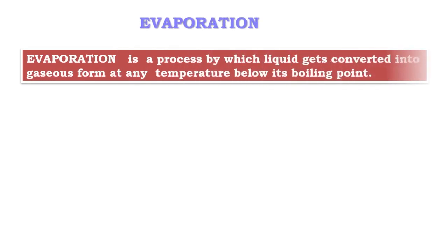What is evaporation? Evaporation is a physical process by which liquid gets converted into gaseous form at any temperature below its boiling point. In evaporation, the liquid state is converted into the gaseous form.